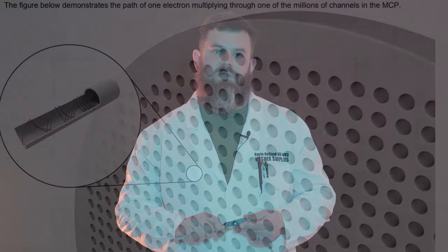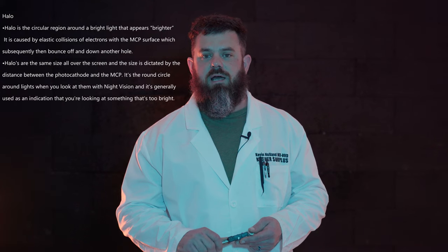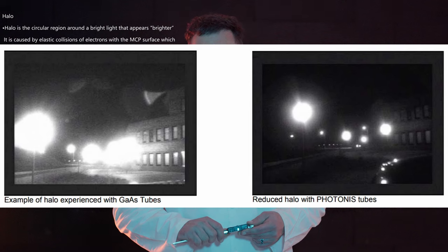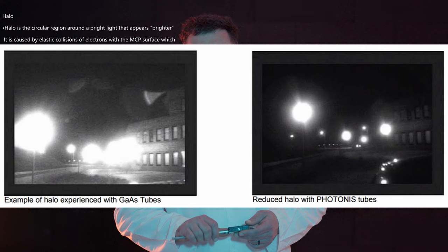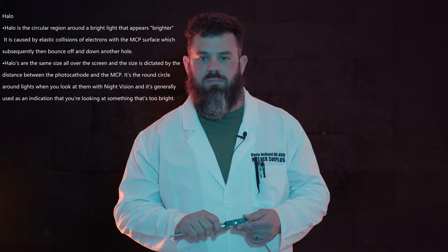This is especially important when using them in applications like photography, clip-on devices, or astronomy — all these things become the sum of all parts, so it's very important to have everything in line. Halo is the circular region around bright lights that appears brighter. It is caused by elastic collisions of electrons with the microchannel plate surface, which then subsequently bounce off and down another hole in the microchannel plate. Halos are the same size all over the screen, and the size is dictated by the distance between the photocathode and the microchannel plate. It's the round circle that appears around lights when you look at them. It's generally a sign that the light is probably too bright, but ideally smaller halo is better — it creates less of an artifact or distraction while you're using your night vision.